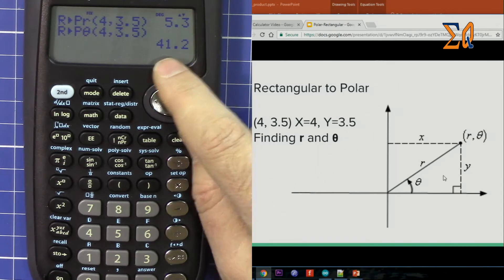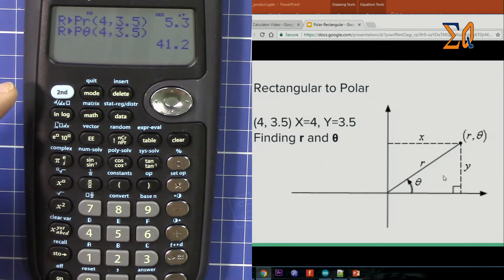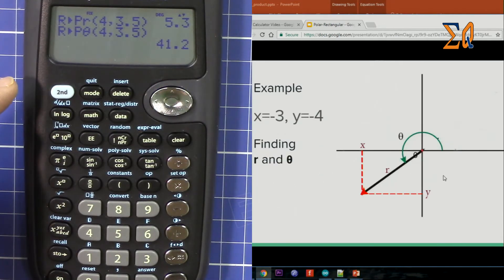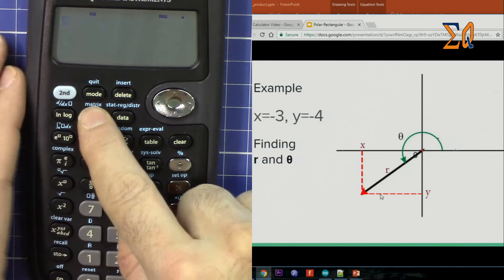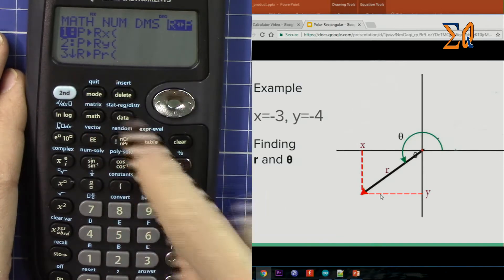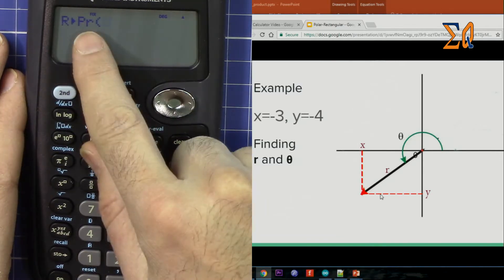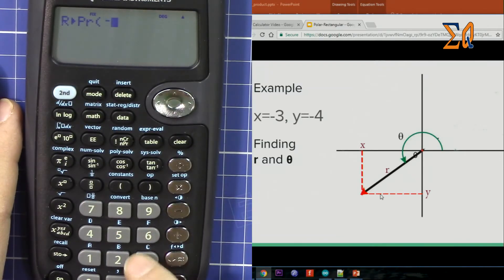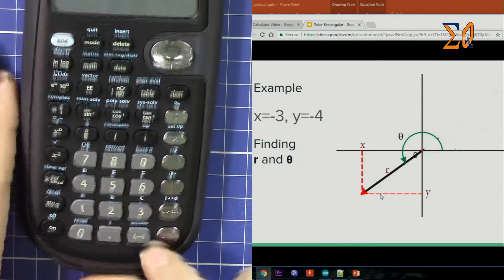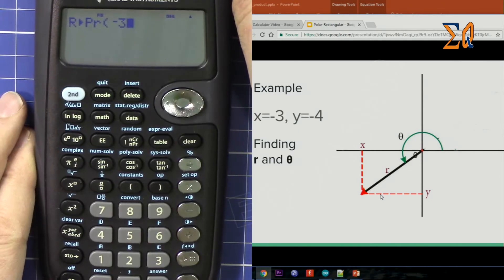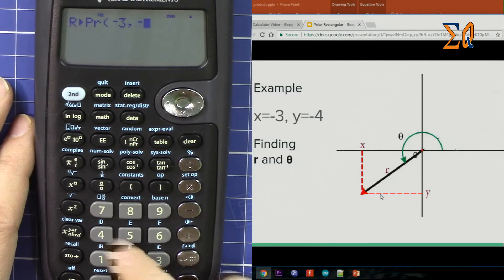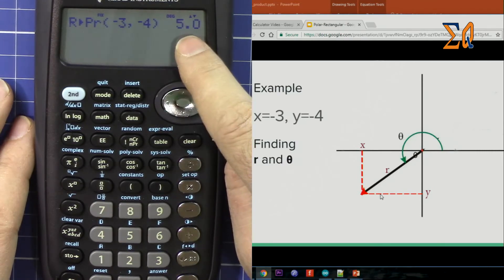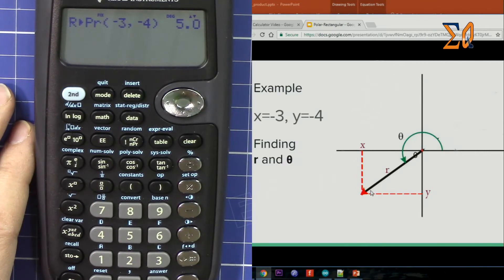Now let's do another example. X is minus 3 and Y is minus 4. So X here is minus 3, and then press math, go to the left, and then 3. So now we get R from rectangular. Minus 3, second function, comma, and then minus 4, close it. So now it gives us the R, so this R is 5.